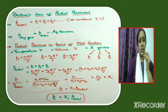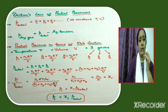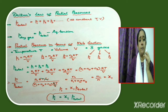According to Dalton's law, the total pressure of a mixture of non-reactive gases is equal to the sum of the partial pressures of the individual gases. So we can write: P_total = P1 + P2 + P3 + ... at constant temperature and volume.